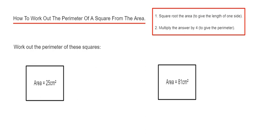You can do this in two steps shown in the red box. Step one: square root the area of the square, which gives you the length of one side. Step two: multiply the answer by four to get the perimeter.